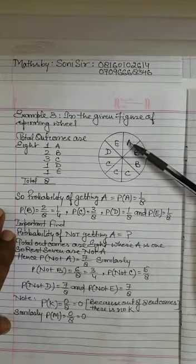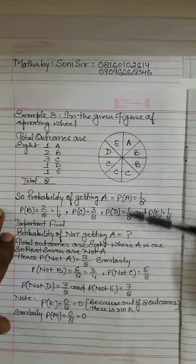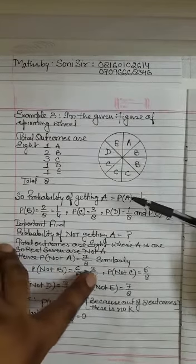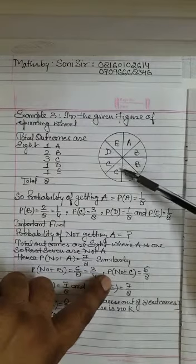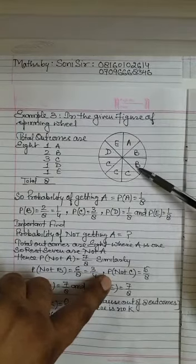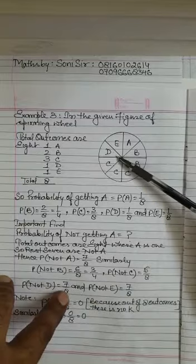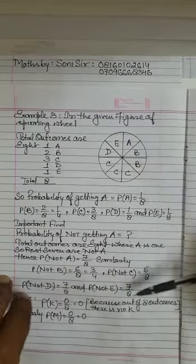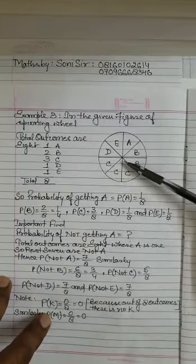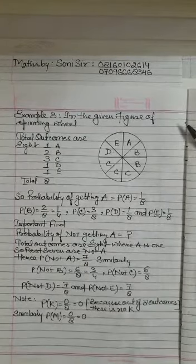Now important: probability of getting not A — A appears one time, so rest seven times is not A, so seven by eight. Probability of getting not B — B is at two places, rest six places are not B, so six by eight equals three by four. Probability of getting not C — three times are C, so five times are not C, so five by eight. Probability of getting not D is seven by eight. Probability of getting K is zero, and probability of getting M is also zero. Thank you to all the students — if any problem, you can call me.